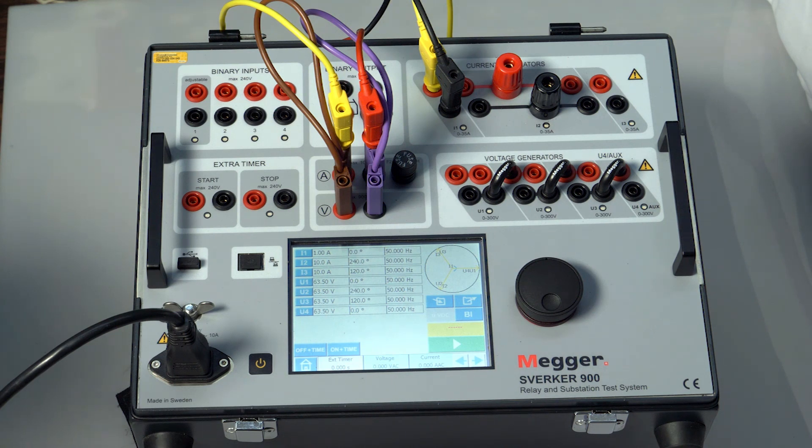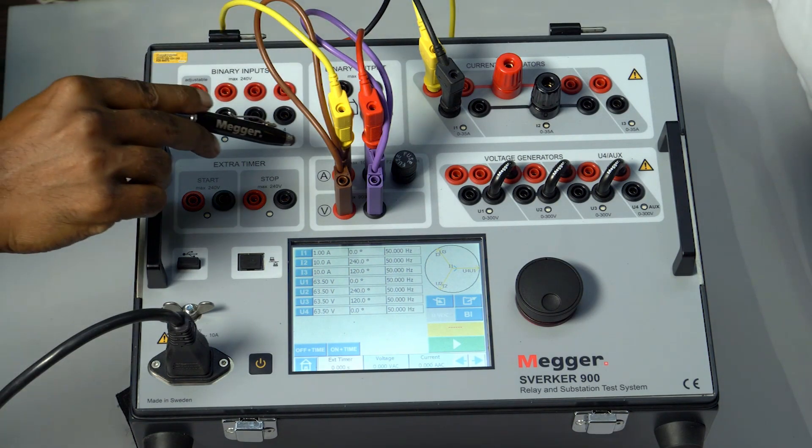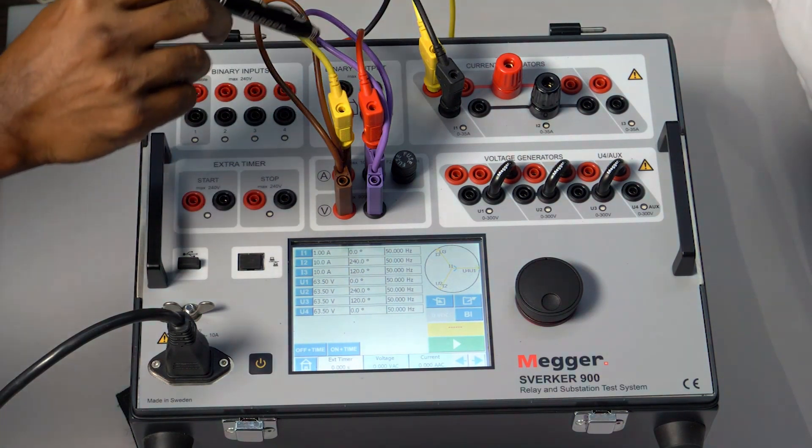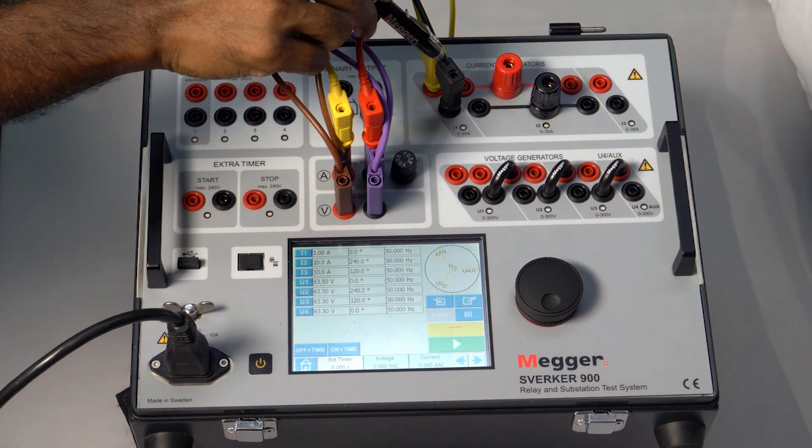CT testing secondary resistance test. In this test, the CT secondary resistance will be measured. Connect the CT secondary to the CT source and the ammeter and voltmeter as shown in the drawing. The CT is connected in series with the ammeter, which in turn is connected to the CT, and the return is connected back to the CT source.